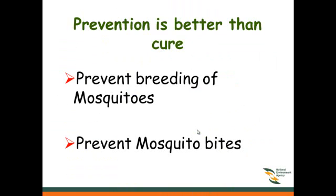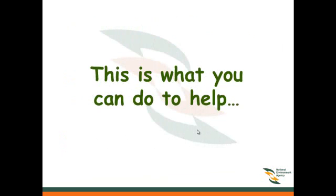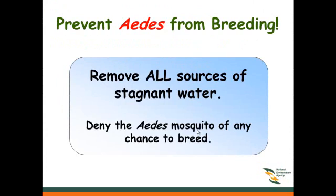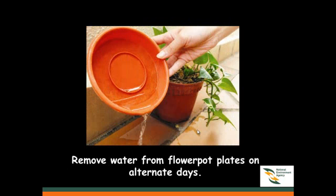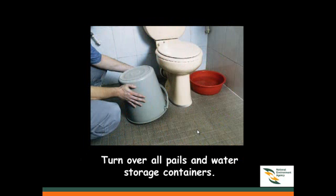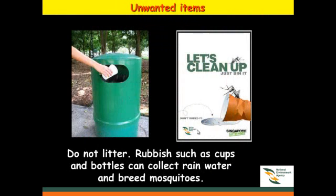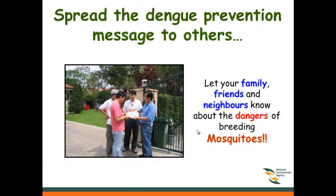Prevention is better than cure. Prevent breeding of mosquitoes and prevent mosquitoes from biting. Remove all sources of stagnant water. Change water in vases on alternative days. Remove water from flower pot plates on alternative days. Turn over all pails and water storage containers. Do not litter — cups and bottles can collect rain water and breed mosquitoes.